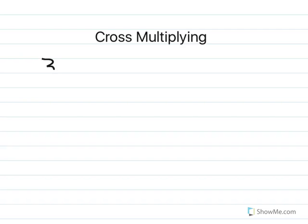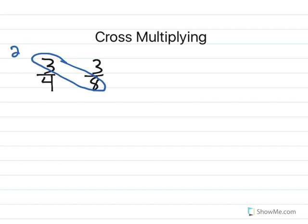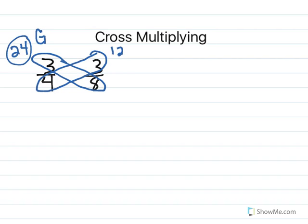The first fractions we had were three-fourths and three-eighths. Cross-multiplying works by multiplying across. We take the three and the eight — three times eight equals twenty-four. You always put the product on top of where you're multiplying. Now we're going to multiply across the other way — three times four equals twelve. Here I can tell that twenty-four is greater. That tells me that the fraction on the left side, which is three-fourths, is greater than three-eighths, because my product that was greater was on the left side.